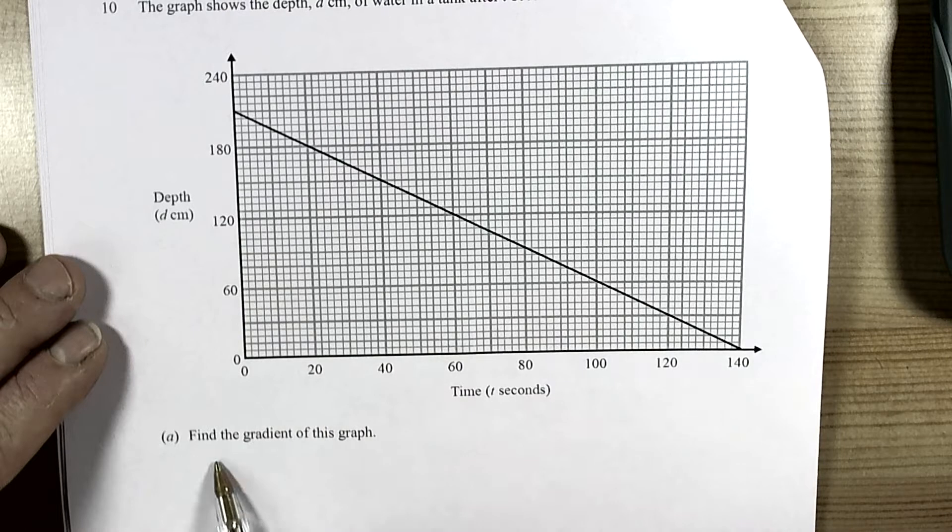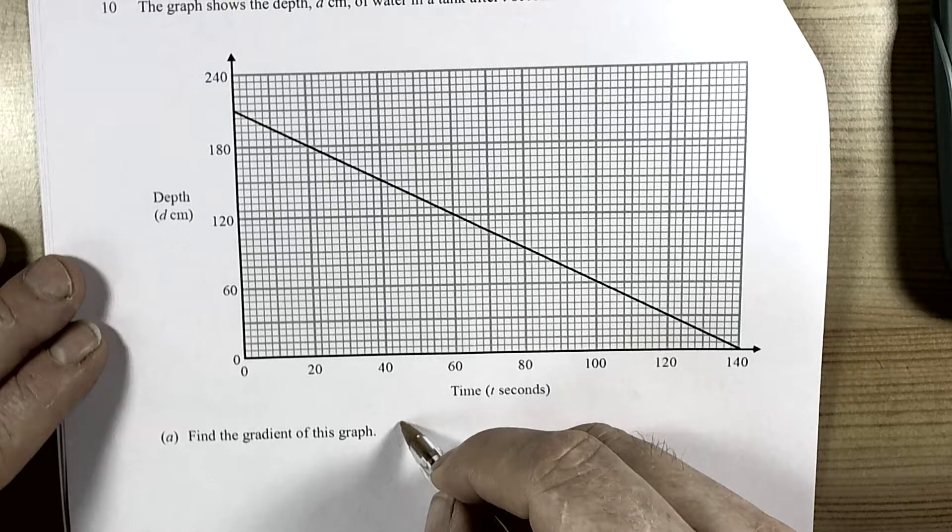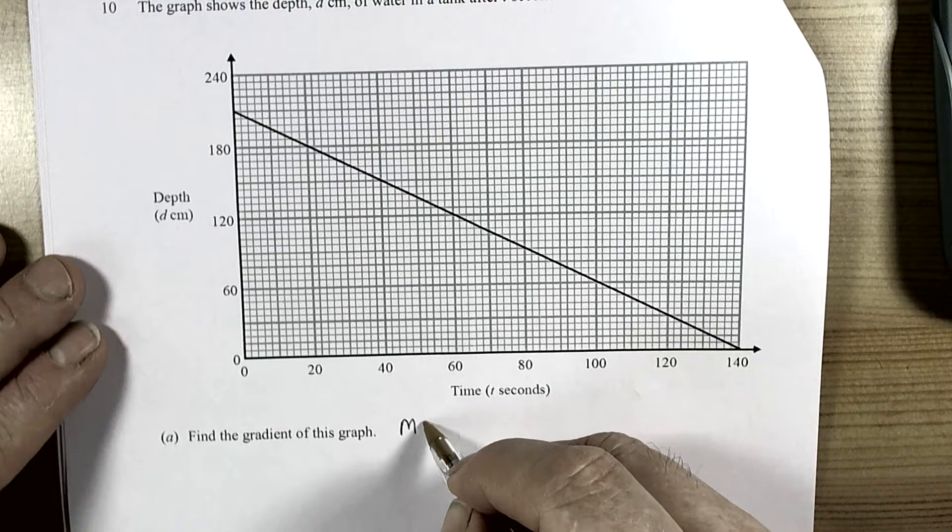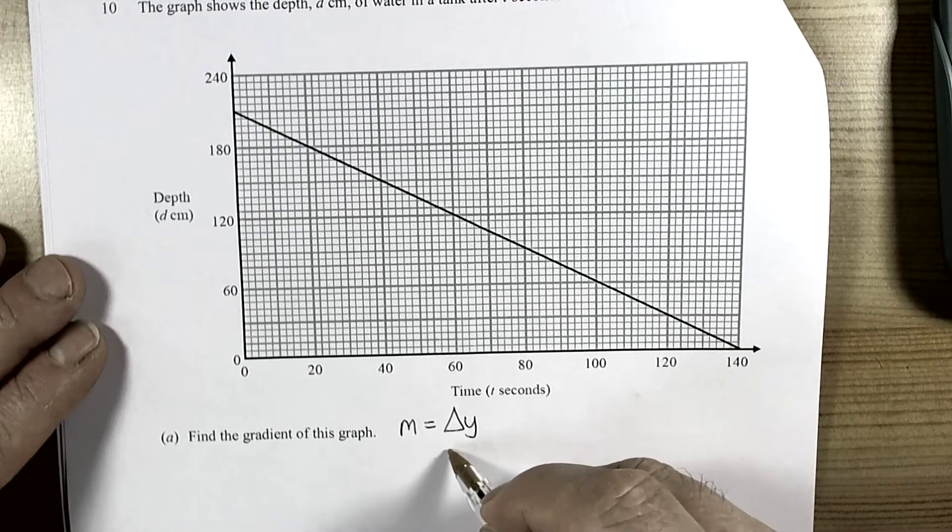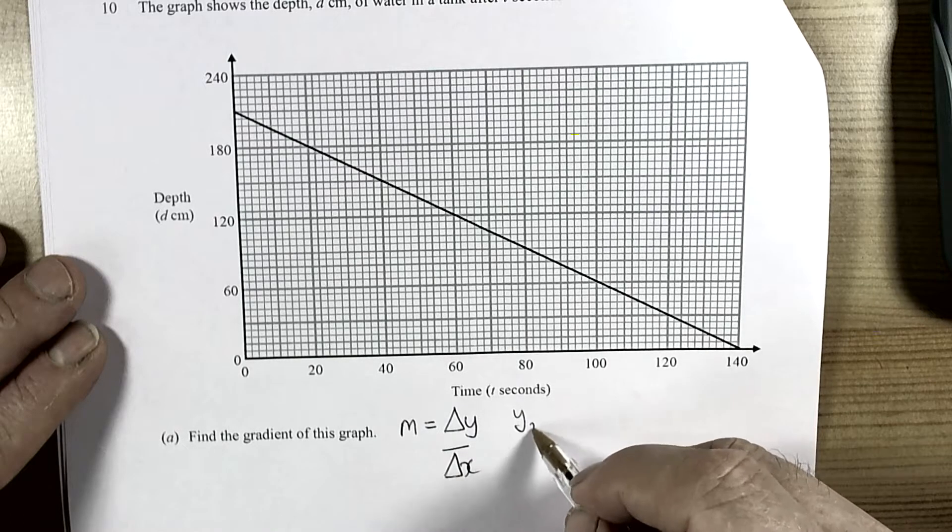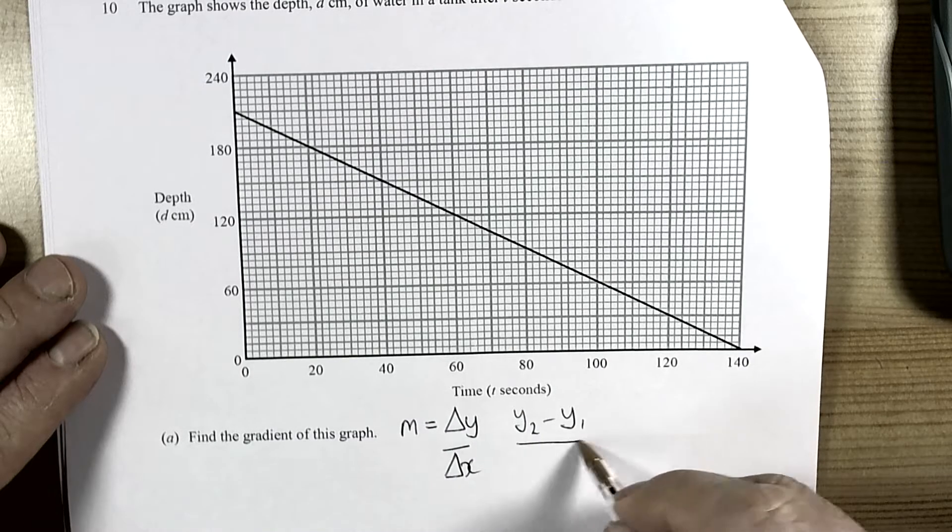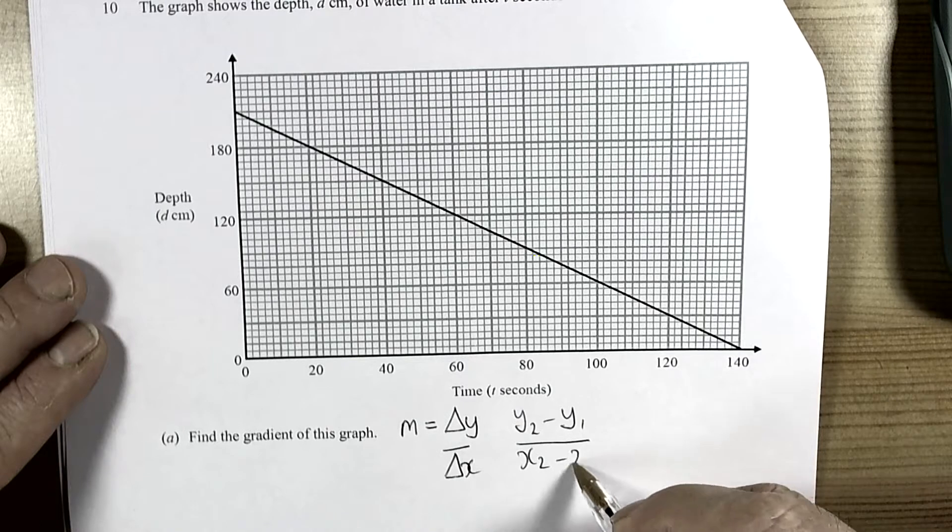So it's asking us to find the gradient of the graph. Well we need to remember the definition of gradient. We use the letter M to represent gradient in straight lines. The definition is the change in the y coordinate divided by the change in the x coordinate. And the formula for it is y2 take y1, x2 take x1.